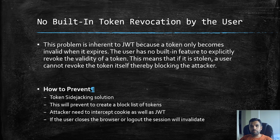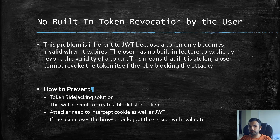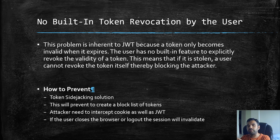One of the best solutions is the sidejacking prevention approach discussed earlier. When the user requests data from the application, the application requires not just the token but also the cookie value. You can always expire the cookie, and if the cookie expires, you invalidate the token as well.